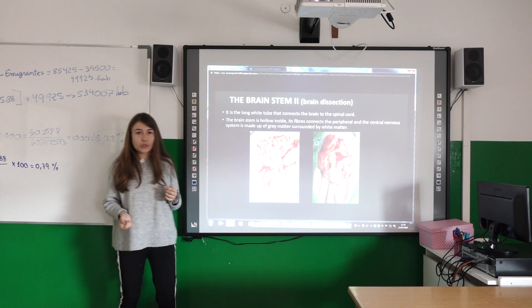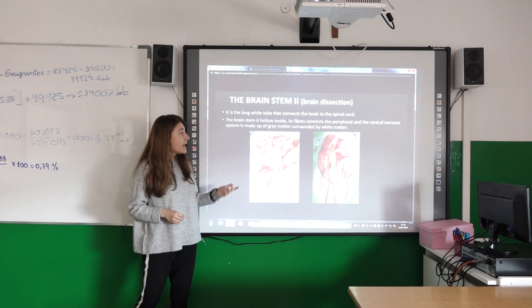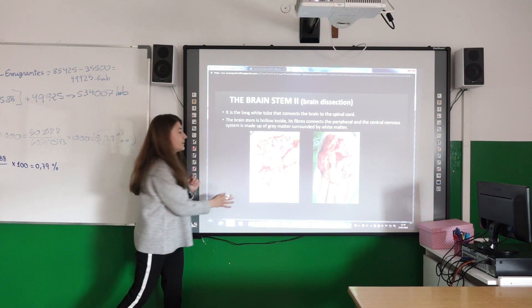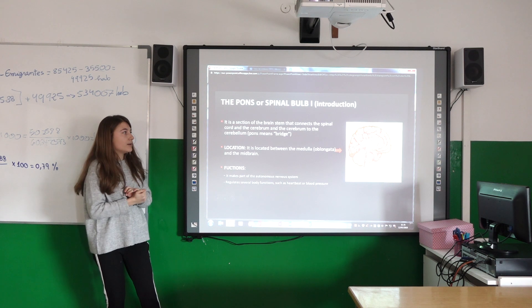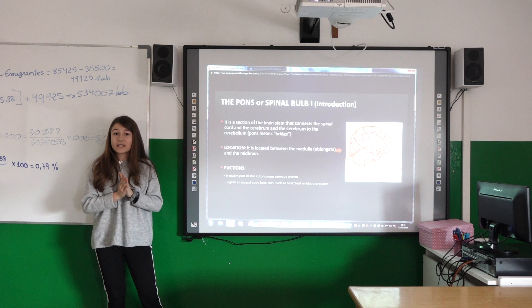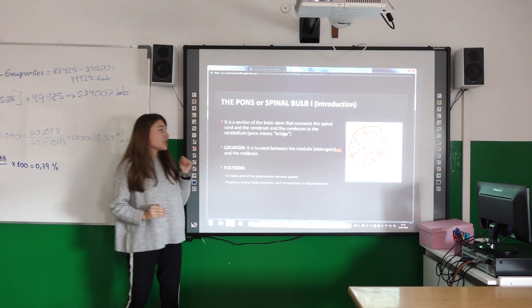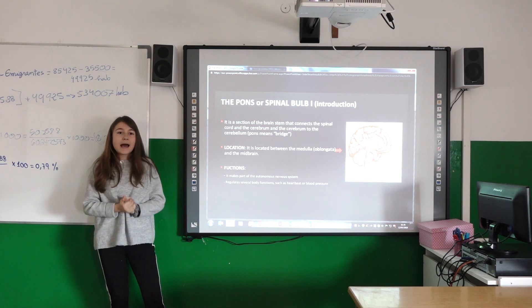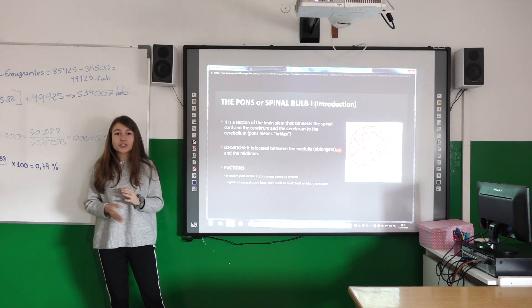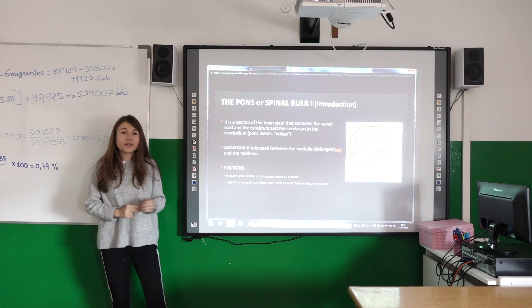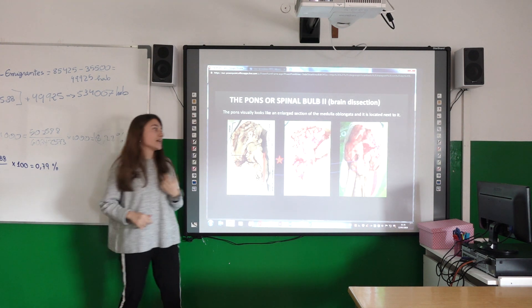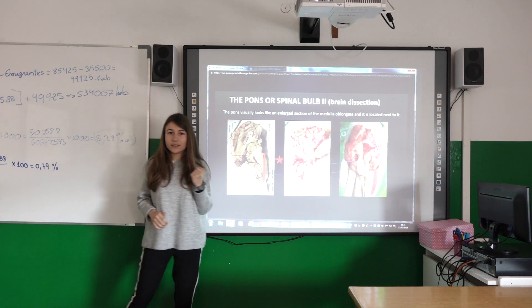As you can see, the brain stem is hollow because we can introduce the wooden stick. It is made up of gray matter but it is covered by white matter. The pons is a section of the brain stem that connects the spinal cord and the cerebrum. It is an extension of the medulla, so its location is between the medulla and the mid-brain. It has autonomous functions that regulate body functions like heart rate, blood pressure, and breathing. Here you can see a photo of my dissection showing the pons.